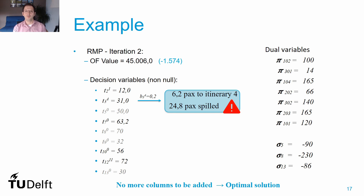I hope this exercise helped you understand how the column generation algorithm works and how we can smartly choose which columns to add at any time. We can use this algorithm to solve many linear optimization problems. The challenge is always to define the pricing problem and choose the initial set of columns. The algorithm is especially useful when the pricing problem is used to generate new columns — when we have so many decision variables it is almost impossible to know them all at the start. This happens, for instance, in the fleet allocation problem or the crew pairing problem in the airline planning framework.